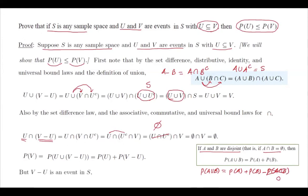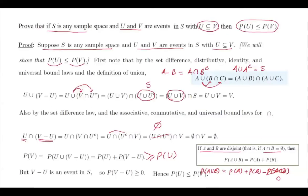Now, V minus U is an event in S, so its probability is non-negative. This means P(V) = P(U) + P(V minus U) must be greater than or equal to P(U). Therefore, we have proven that probability of U is less than or equals to probability of V.